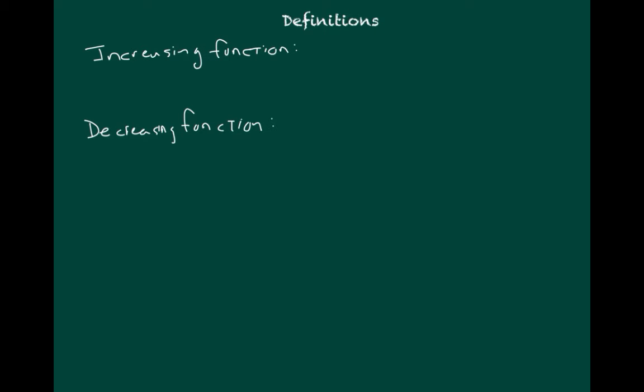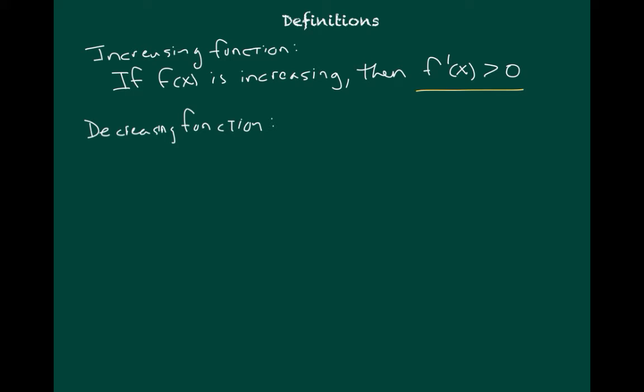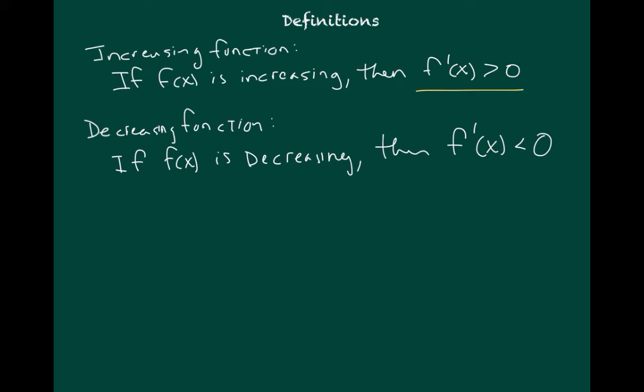As we get started, let's remind ourselves of some definitions we already know. If f of x is increasing, then the derivative f prime of x is greater than zero. The opposite is true for decreasing: if f of x is decreasing, then f prime of x is less than zero, or negative. And if f prime of x equals zero, then the function is neither increasing nor decreasing.